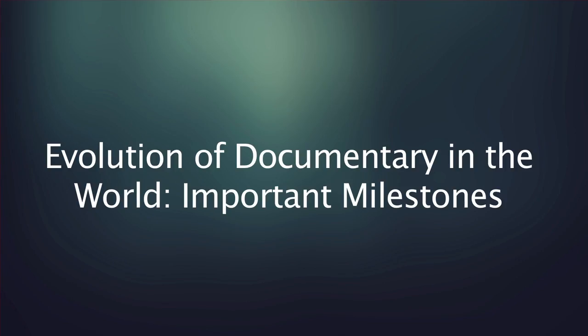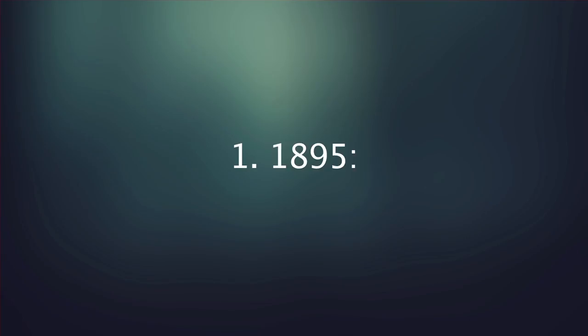Evolution of Documentary in the World — Important Milestones. 1895: The two Frenchmen, Lumiere Brothers — Louis and Augustus Lumiere — started making one-minute-long, unedited, single-shot films to record single actions like a train coming onto the station or factory workers leaving for work. These films were called Actuality films because they captured snippets of actual events in everyday life. These short films were screened in Paris, and the camera used could hold 50 feet of film stock.